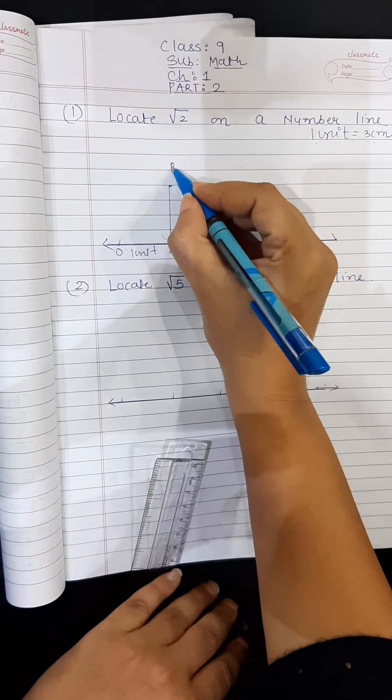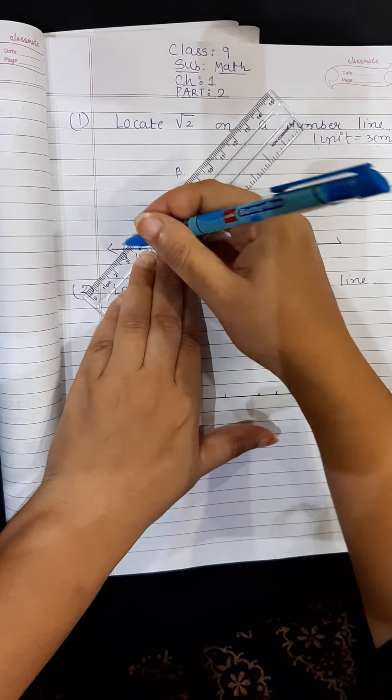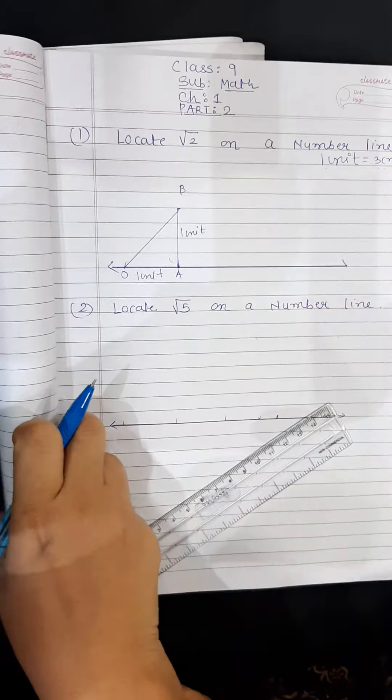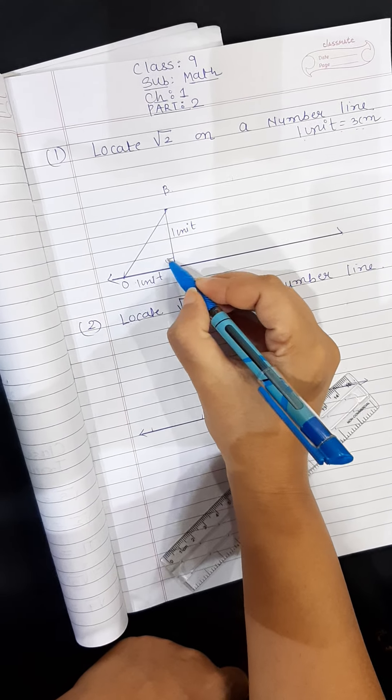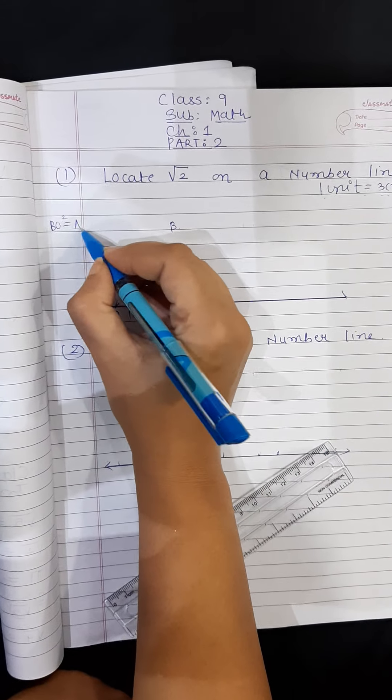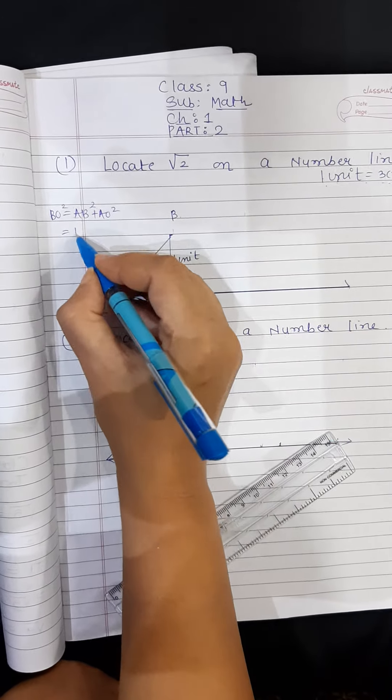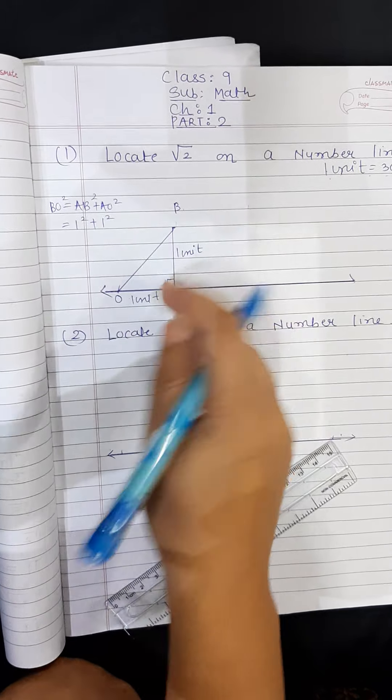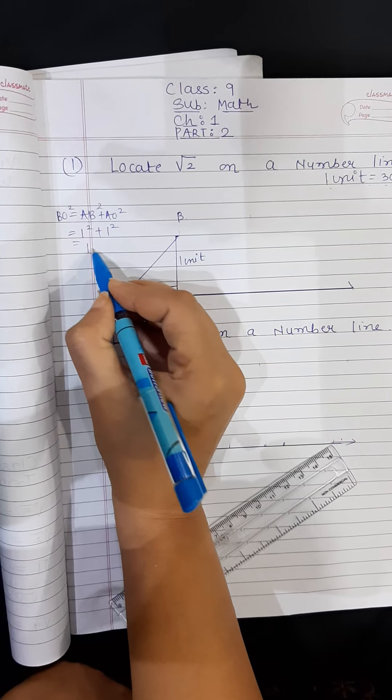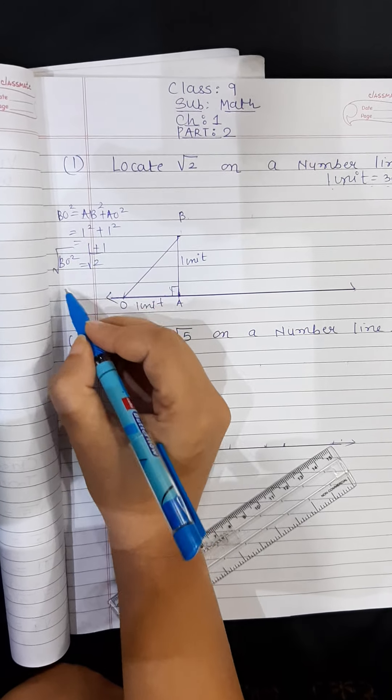This will be my B and I will simply join O with B. This is also 1 unit. Now you remember the Pythagoras what we used to do. This is now a right angle. So BO square equals AB square plus AO square. Now AB is 1 unit, so 1 square. AO is 1 unit, so 1 square. Don't write 3. We have already specified 1 unit is 3 centimeter. Now square of 1 is 1, square of 1 is 1, which is 2. So BO square is 2. So BO is under root of 2.